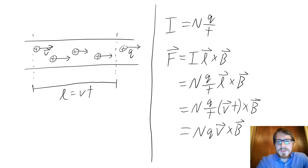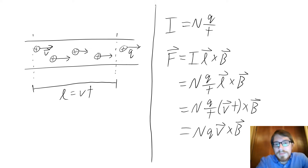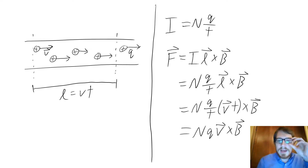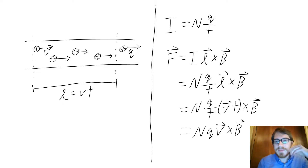The force on a current-carrying wire is the current times the length of wire within the magnetic field times the magnetic field's strength — force is I L cross B.